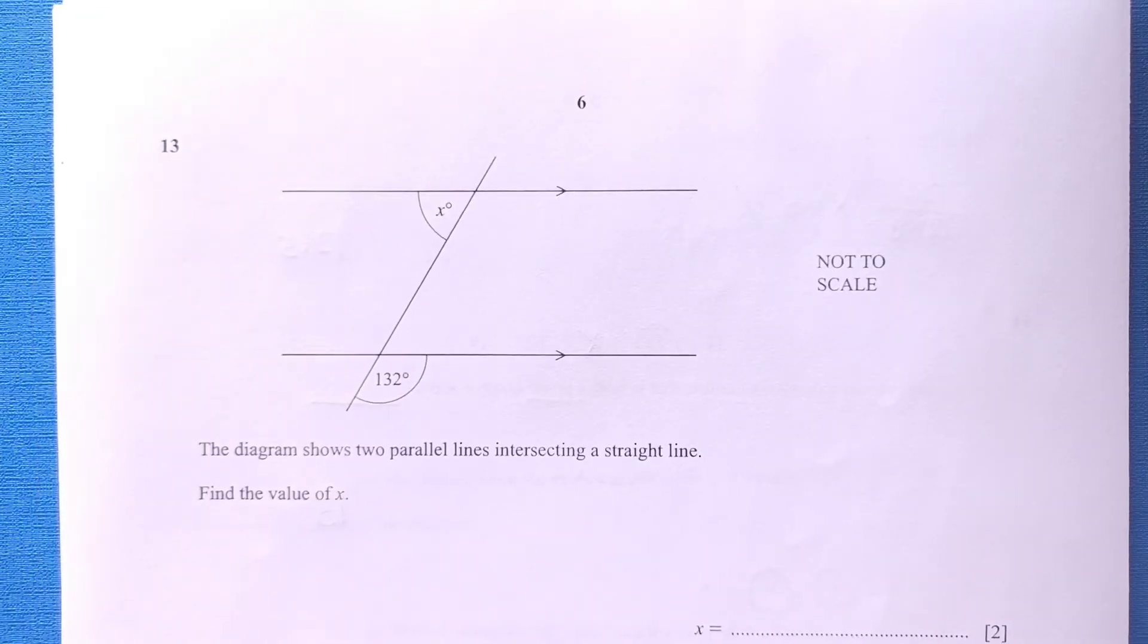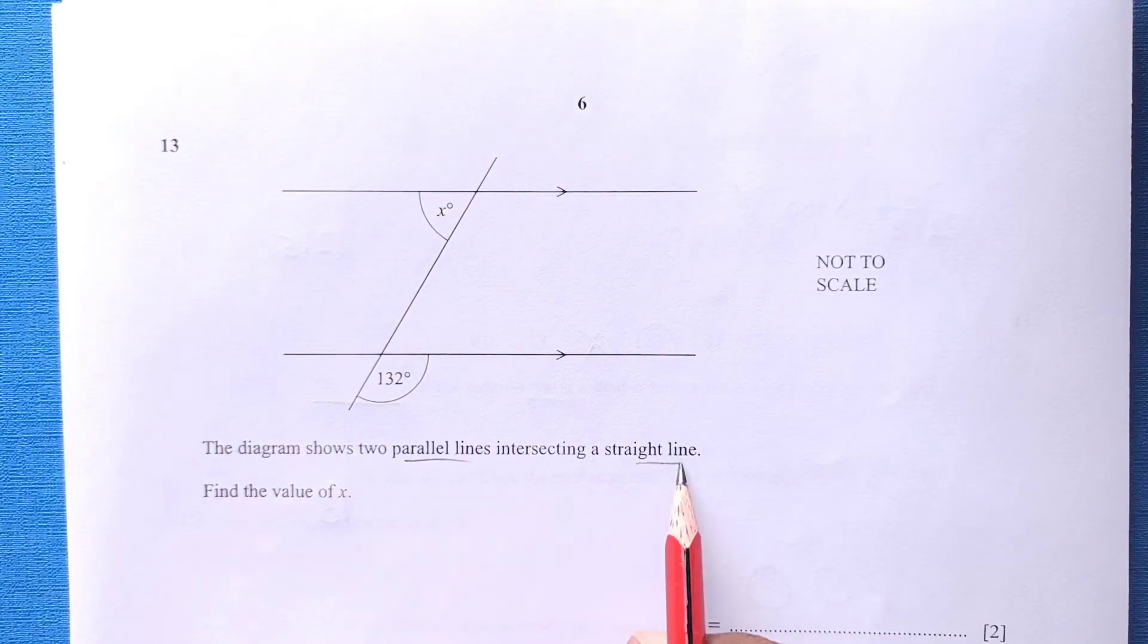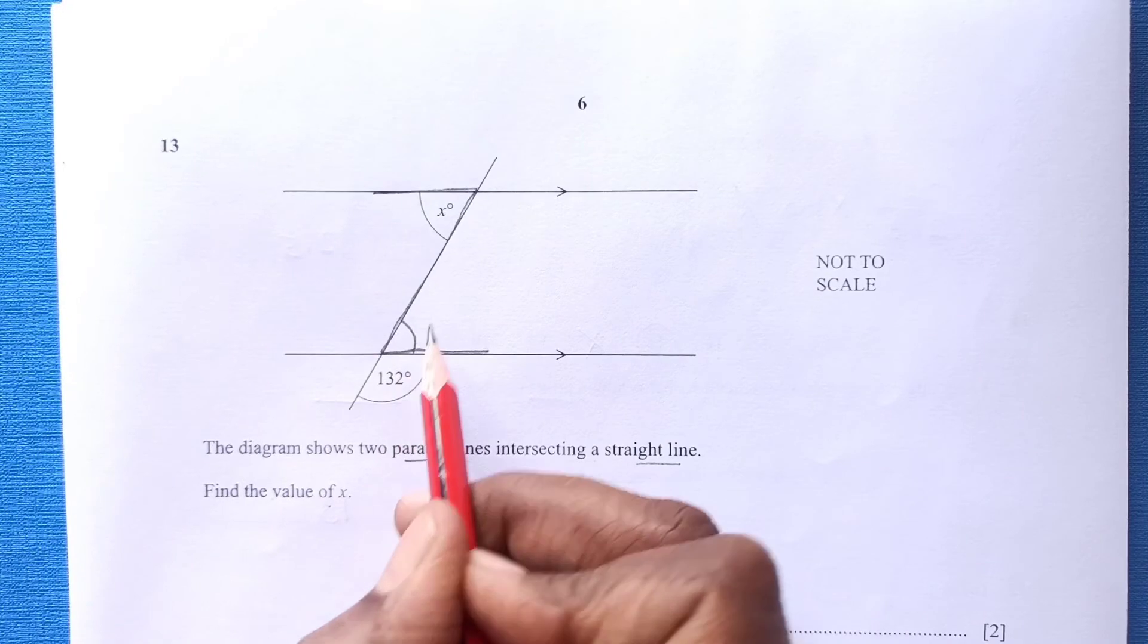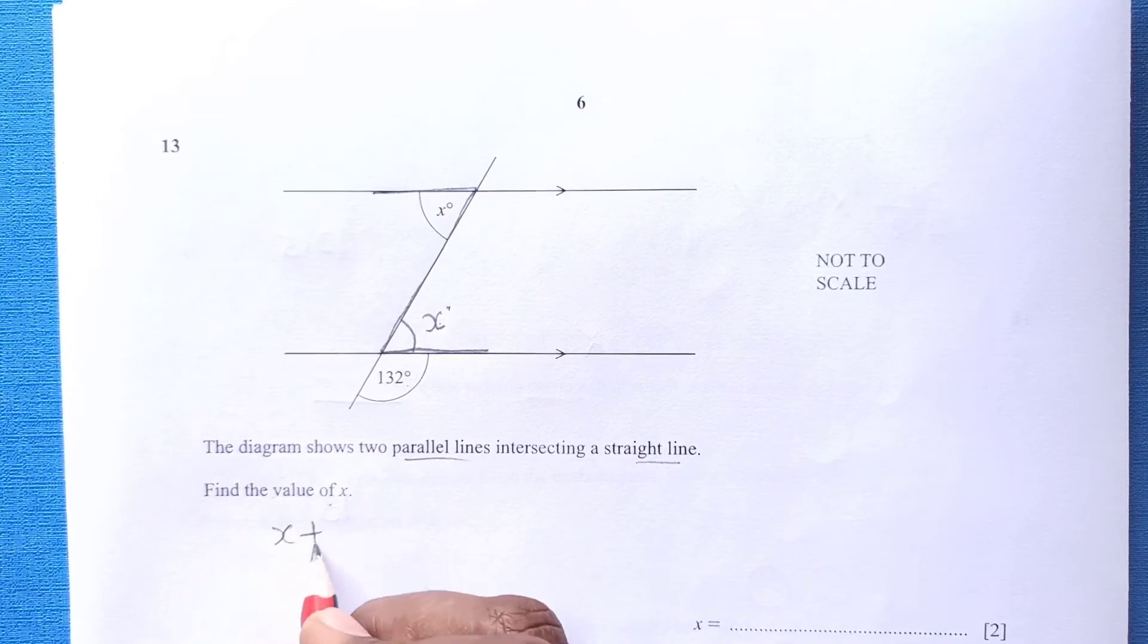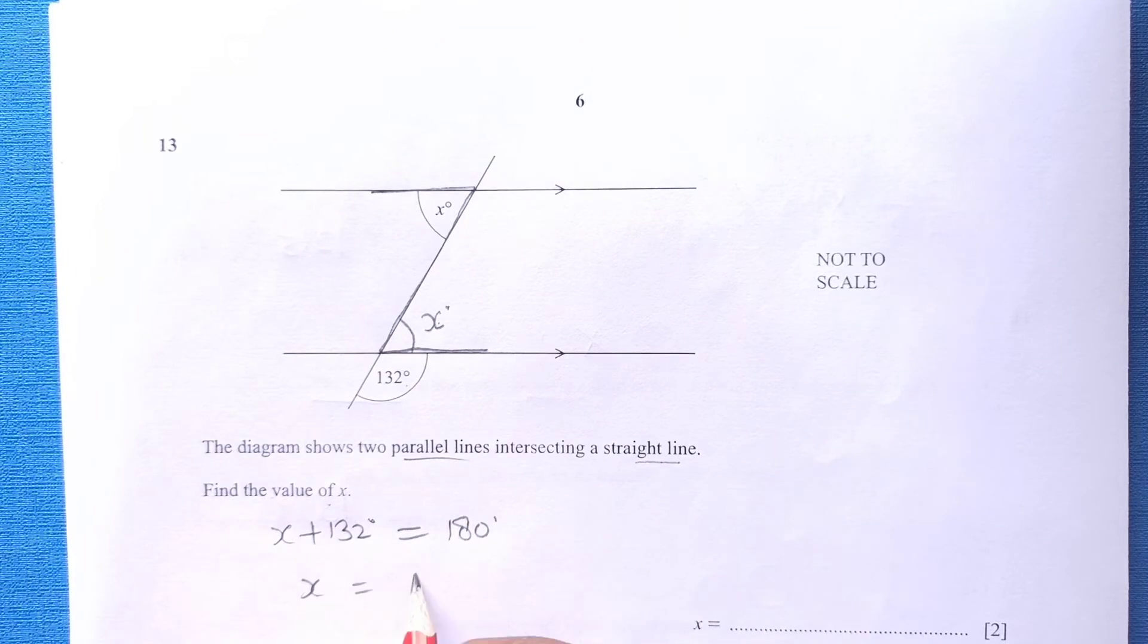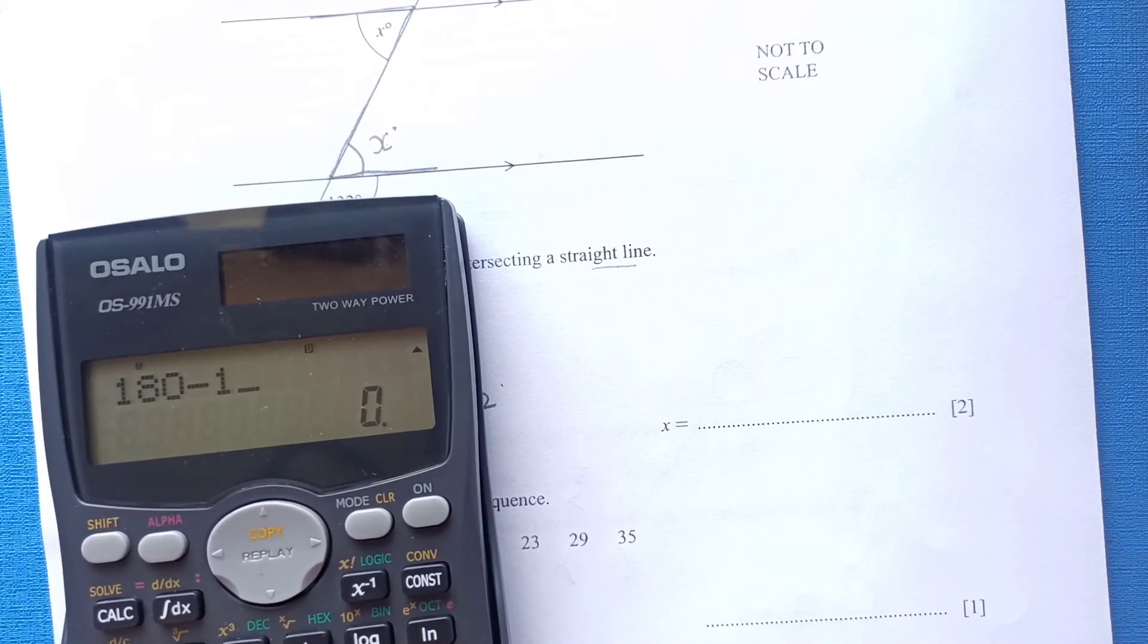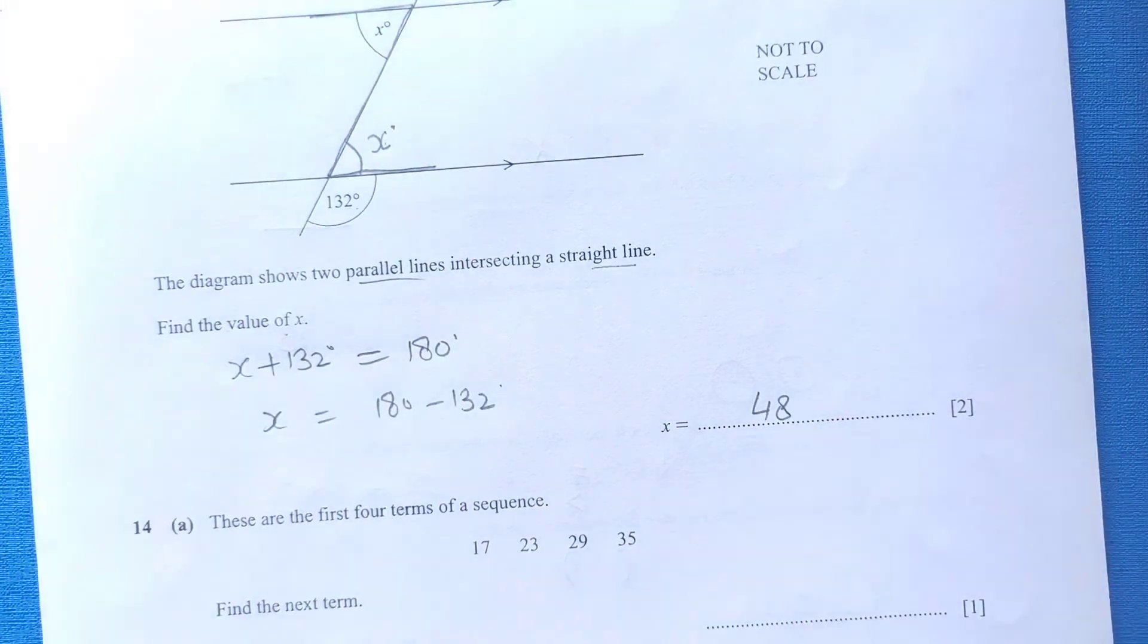Number 13: You can see this diagram. The diagram shows two parallel lines intersecting at a straight line. Find the value of x. If you see here, this is a z shape. Z shape, you can see. If this is x, this will also be x, because this is alternate angle. Now x plus 132 will be 180 degree. x will be 180 minus 132. 180 minus 132, it is 48. x will be 48.